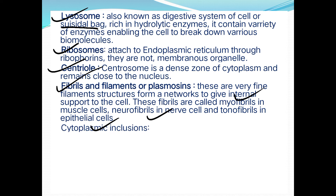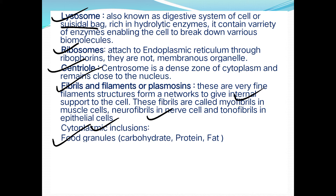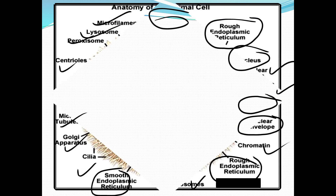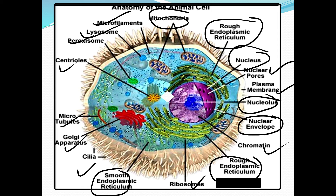Cytoplasmic inclusions include food granules — carbohydrates, proteins, and fats — found in every cell. Pigments are also present, and secretory granules are found as well. That concludes the cell discussion.